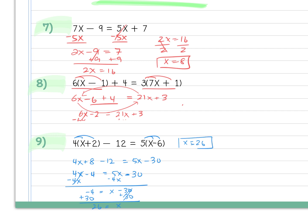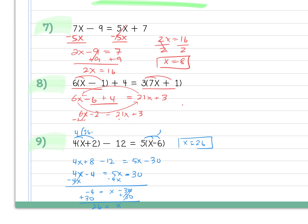You can always double check yourself. If you're concerned your answer doesn't make sense, plug it back in. 4 times 28 is 112 minus 12, which is 100. And 5 times 20 is also 100. The left equals the right, so it worked. Always double check if your numbers feel weird or you're not confident.